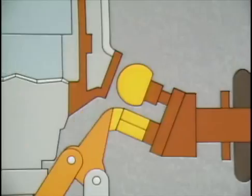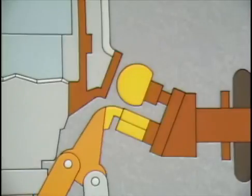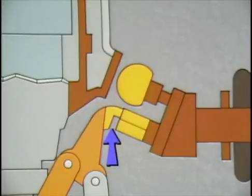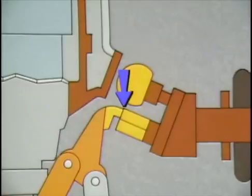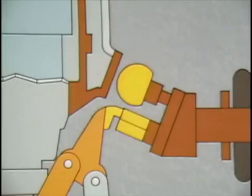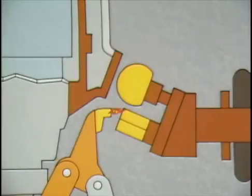Now let's close the contacts and see how the breaker works to open the circuit and extinguish the arc that is created. When the breaker trips, the contacts begin to move apart. The main contacts separate first. Arcing does not occur because the circuit is still complete through the arcing contacts. As the contacts continue to move, the arcing contacts separate, creating an arc.